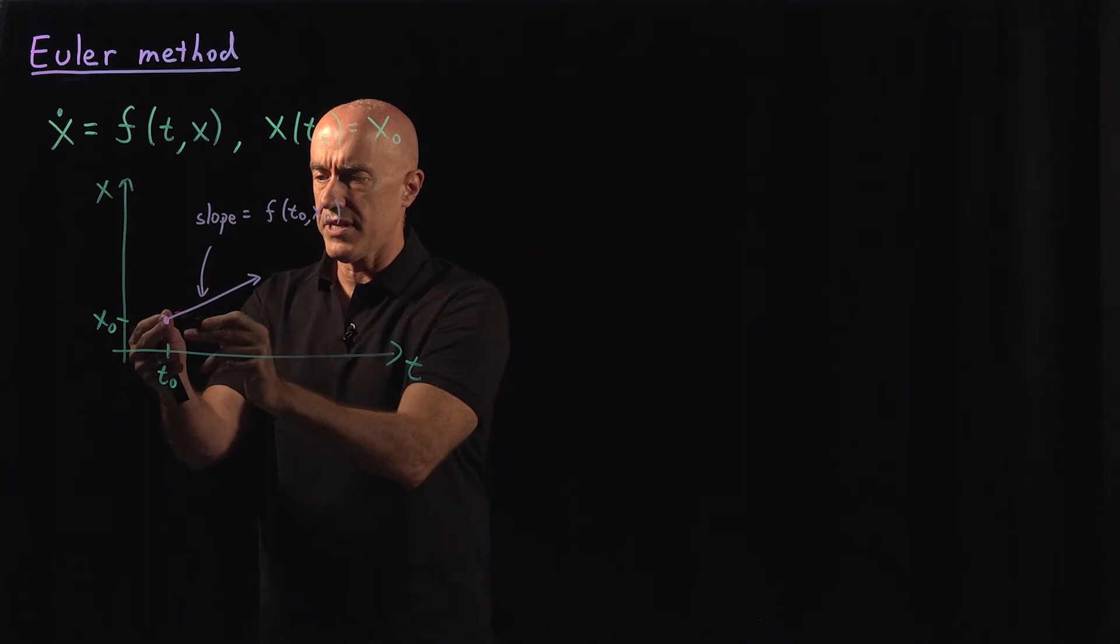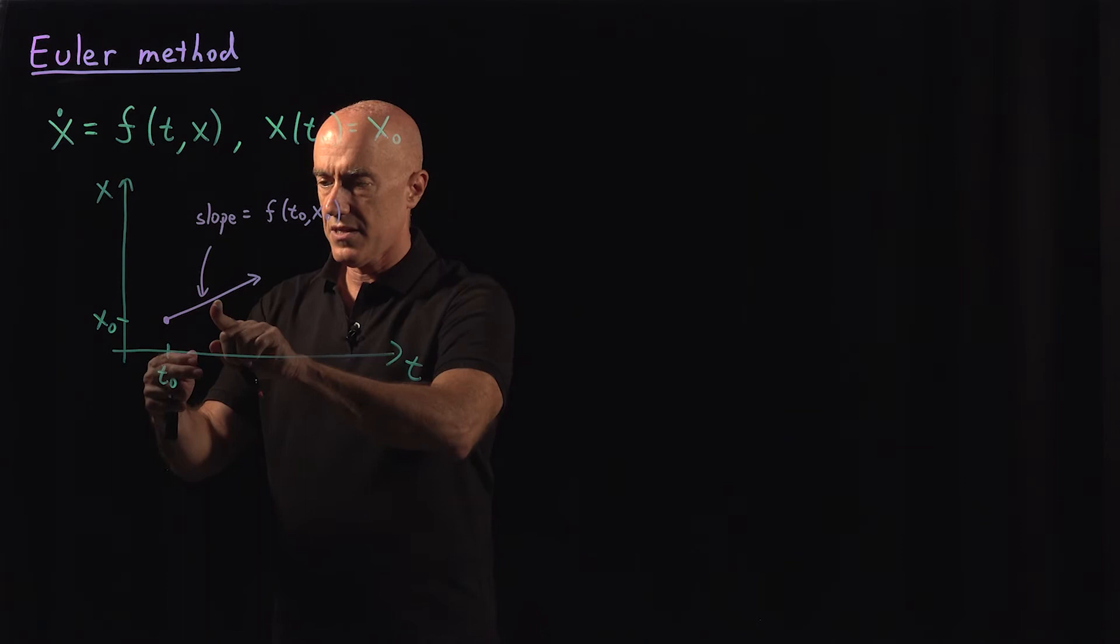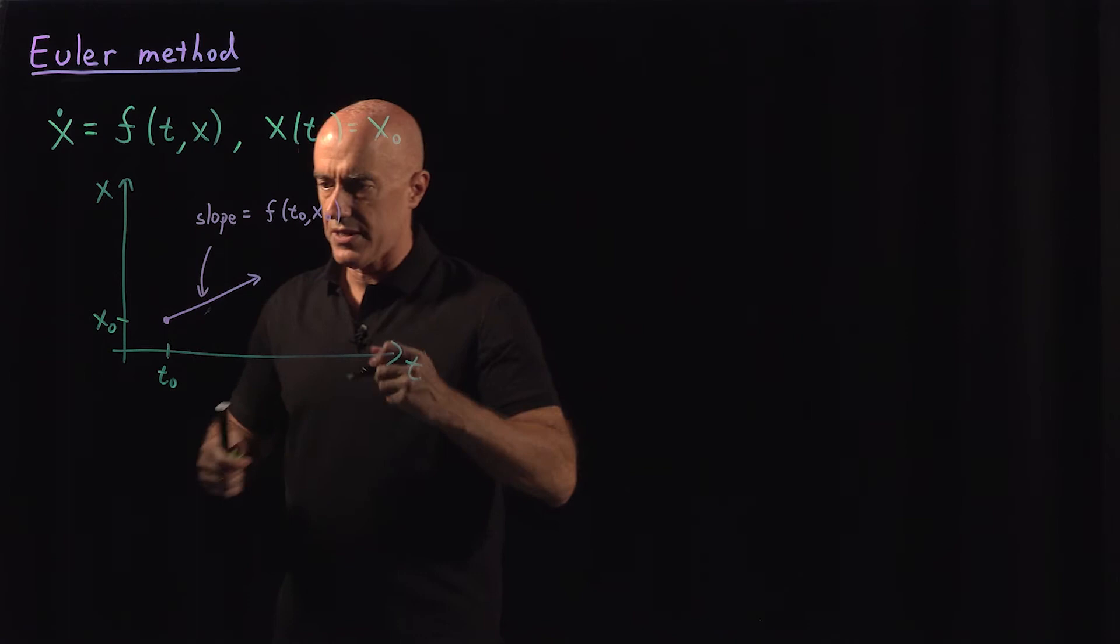And the slope here is equal to f evaluated at t naught and x naught. So the solution is following this line. At least for a small delta t, if we're incrementing by delta t, the solution is following along this line. So let's go to the next point.